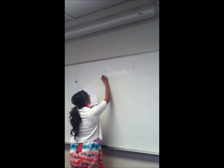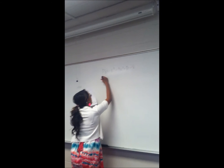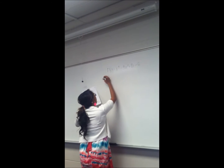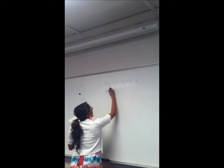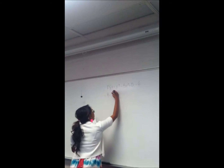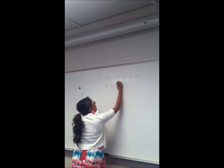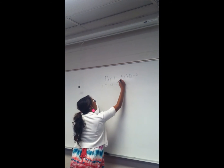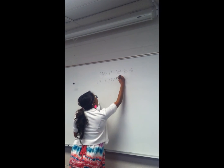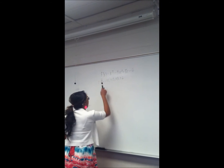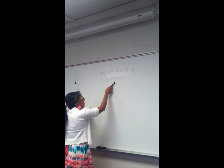We take our factors of six over one, and we say plus or minus, because we don't know if they're negative or positive. Our factors are going to be plus or minus one, plus or minus two, plus or minus three, and plus or minus six, because these are the factors of six. And since they're over one, we won't have any fractions.